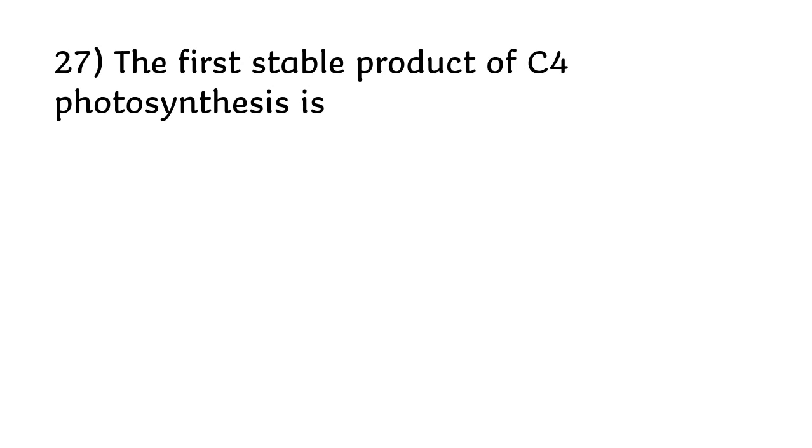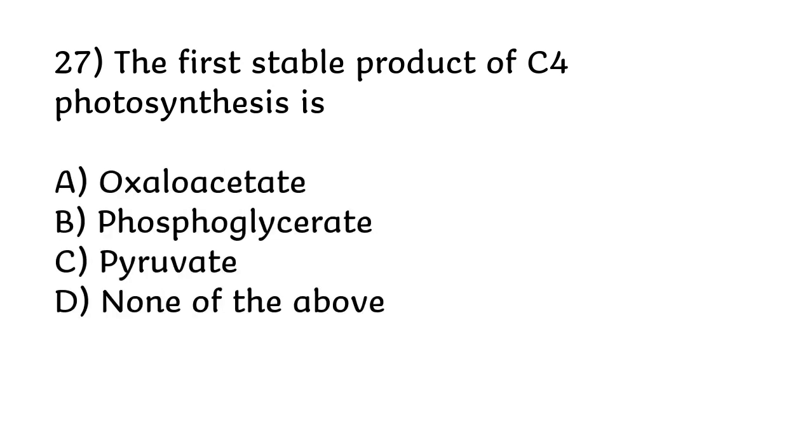The first stable product of C4 photosynthesis is: oxaloacetate, phosphoglycerate, pyruvate, or none of the above. The correct answer is option A, oxaloacetate.